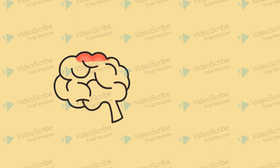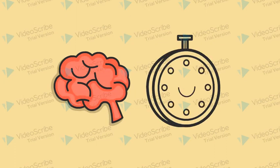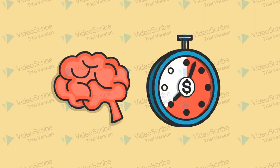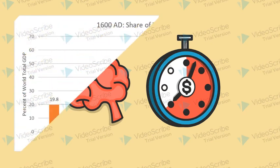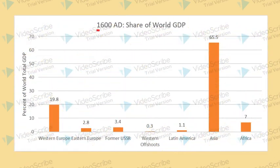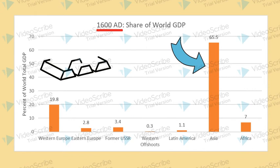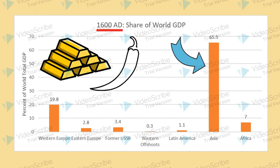So now you know what the term GDP means — let's use this learning to dip into a bit of economic history and briefly analyse some changes. As it's visible on the graph, in the year 1600 AD, Asia had, by far, the largest GDP percentage as a proportion of the whole world — to be exact, 65.5%. This was mainly due to the plenty of raw materials found in the continent, which were traded with other nations.